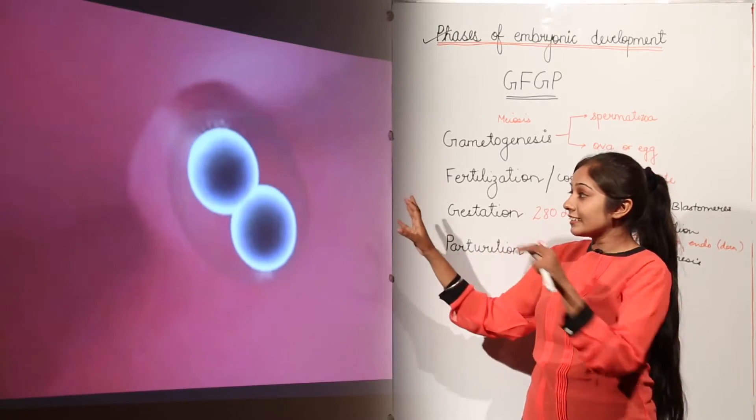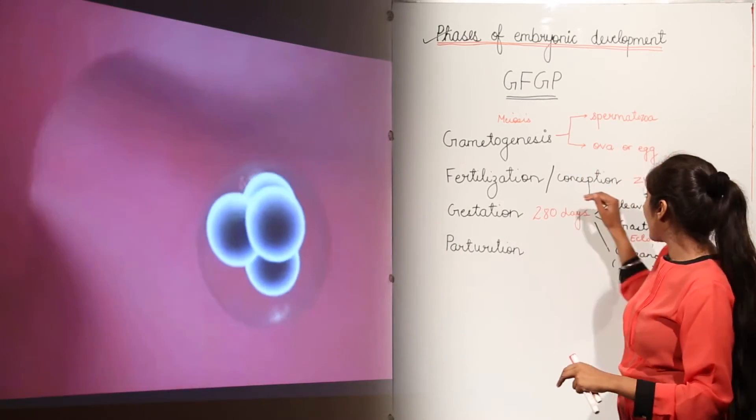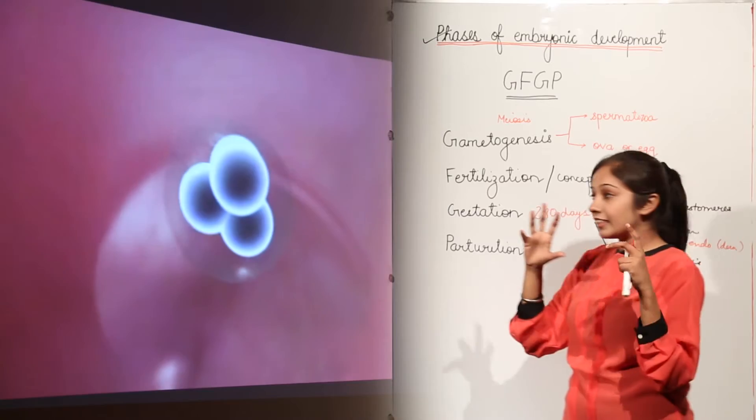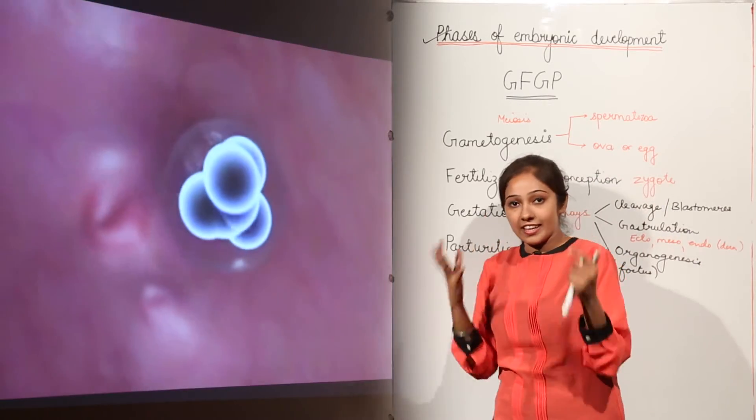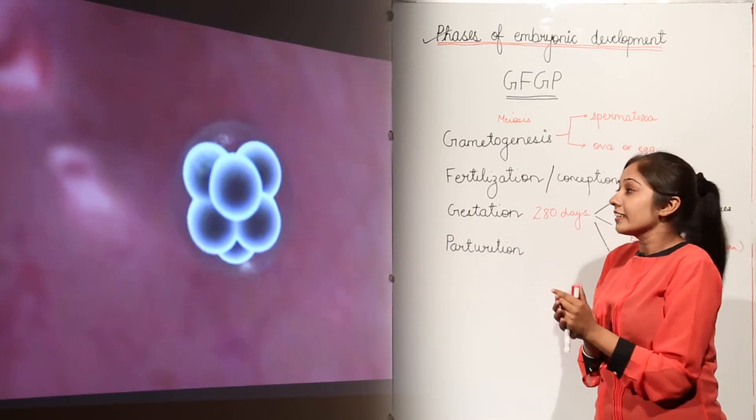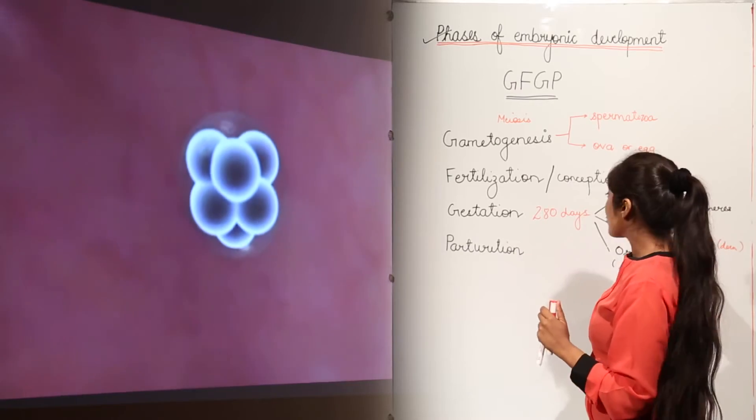So now fertilization is done. Now we see that these cells are going to divide and this is known as cleavage. After this cleavage, there is a multicellular cell stage that we call as blastomeres.